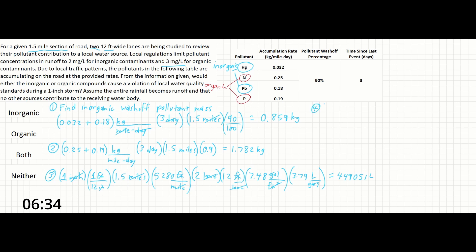So step four is going to be finding the inorganic concentration using the pollutant mass and the volume of runoff. So 0.859 kg over 449,051 liters, and then 10 to the sixth milligrams in one kilogram to complete our unit conversion. And this will give us about 1.91 milligrams per liter. We can see that this is below the limit specified in the problem statement for inorganic contaminants.